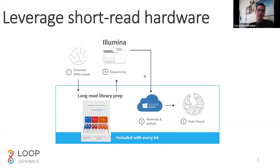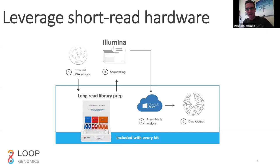The data that comes off the sequencer is used as input into Loop Genomics's cloud-based software. That software takes the short-read data and transforms it into single-molecule long-read data, then performs downstream analyses on it. The fact that we're leveraging existing short-read hardware from Illumina — which has a very established sequencer with a decent error rate — means that the long reads we generate have multiple advantages over existing long-read technologies, most importantly in the error rate. Traditionally, long-read sequencing technologies have suffered from low accessibility, high costs, and high error rates.